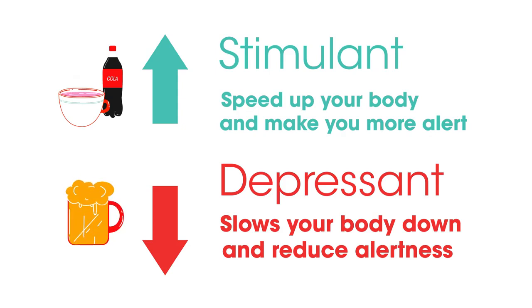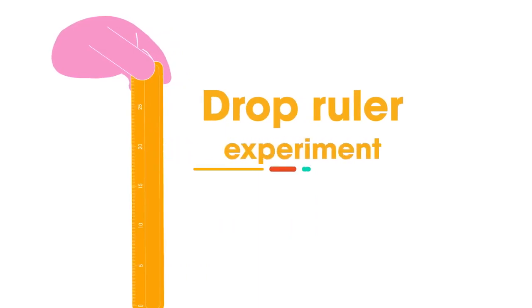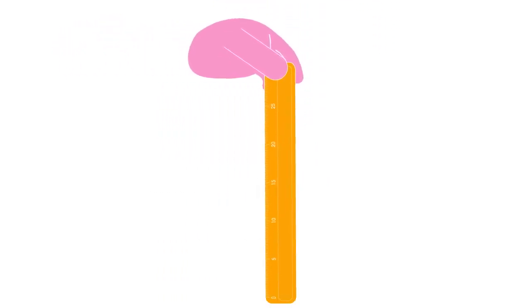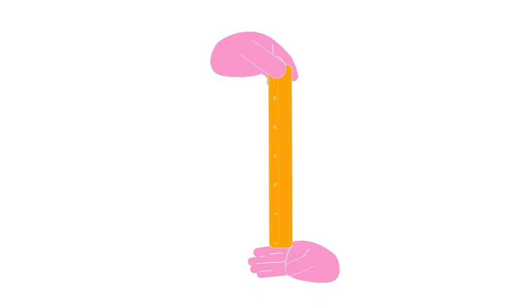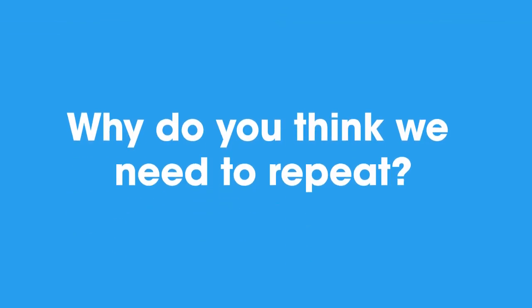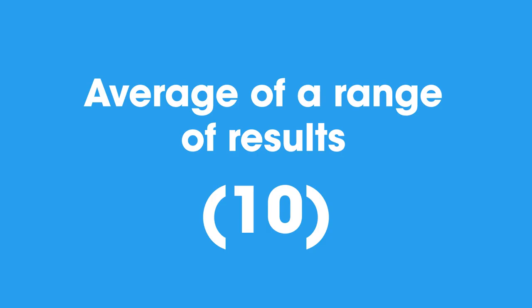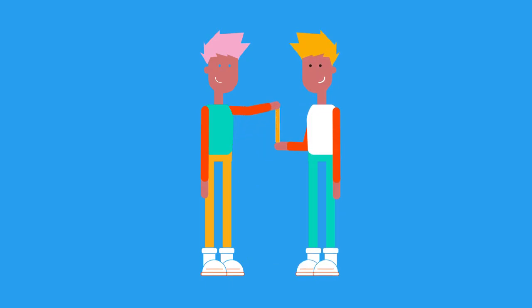One simple way to measure how drug use or distraction might alter your reaction time is to do the drop ruler experiment. One person drops a ruler between the subject's thumb and forefinger, which is placed at the zero centimeter mark. No warning is given. The distance the ruler has dropped before being caught is read off the scale. This is repeated many times so that we can work out a mathematical average of a range of results — ten, for example — to reduce random errors.